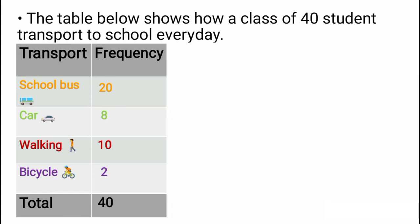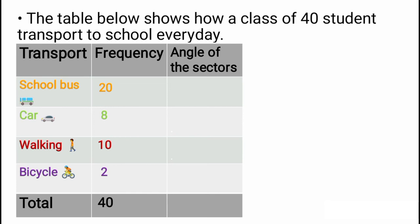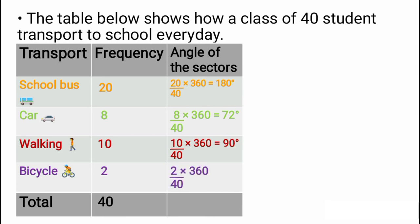The only thing left is to create a column for angle of sector. Remember the formula: frequency over total frequency multiplied by 360. School bus: 20 over 40 multiplied by 360 equals 180. Car: 8 over 40 multiplied by 360 equals 72. Walking: 10 over 40 multiplied by 360 equals 90. Bicycle: 2 over 40 multiplied by 360 equals 18.